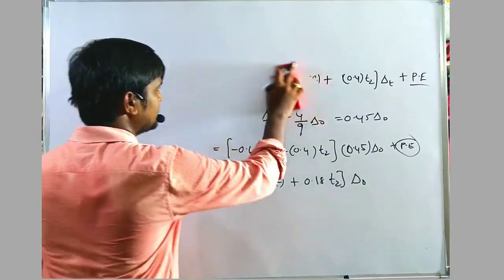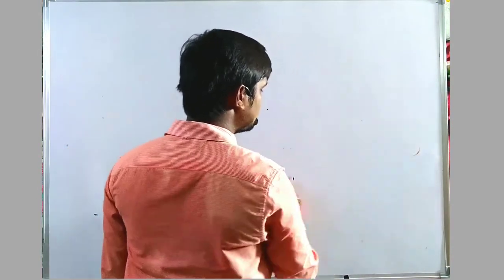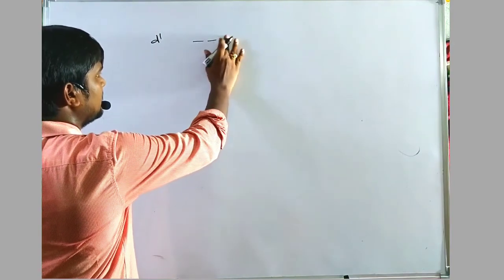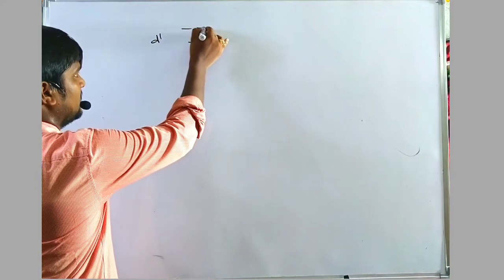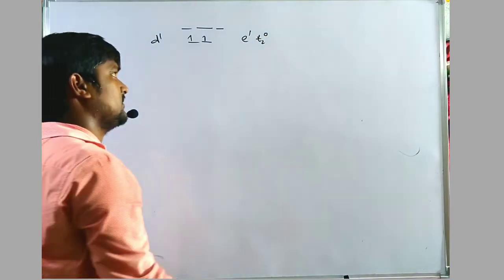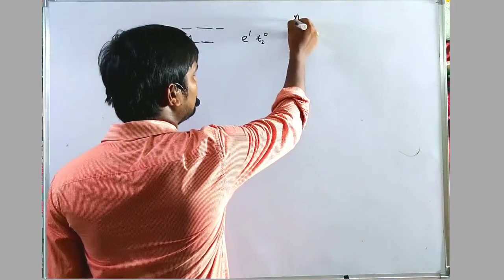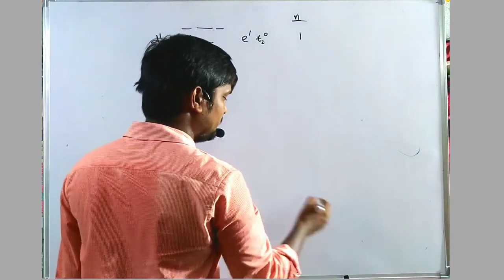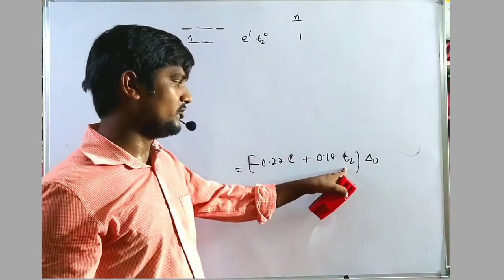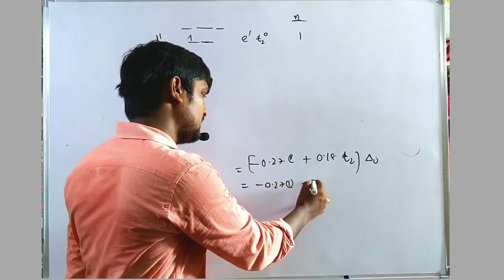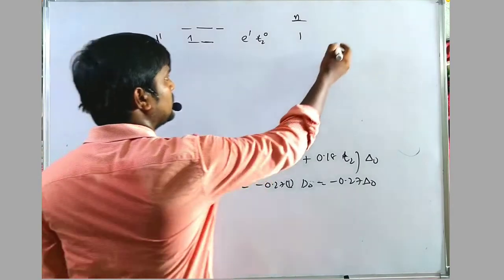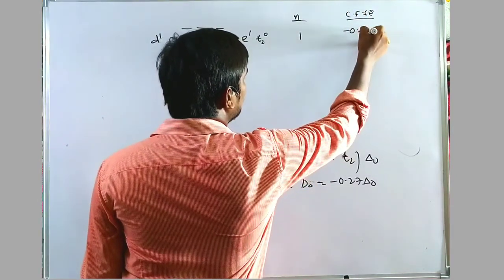Substituting ΔT = 0.45 ΔO, the formula becomes: CFSE = [minus 0.27 × (number of E electrons) + 0.18 × (number of T2 electrons)] × ΔO. Tetrahedral complexes are caused by weak field ligands, so pairing energy is negligible. For D1: configuration E¹T2⁰, 1 unpaired electron. CFSE = minus 0.27 × 1 × ΔO = minus 0.27 ΔO. For D2: E²T2⁰, 2 unpaired electrons, CFSE = minus 0.54 ΔO.